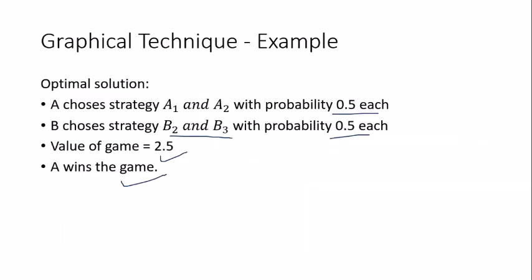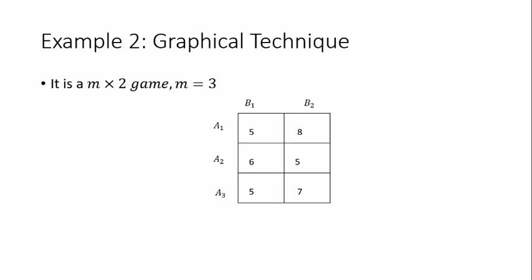Because three lines meet at the peak in this example, there are alternate valid strategy combinations (b2 & b3, b2 & b4, or b3 & b4). The probabilities will differ depending on which pair is chosen, but the value of the game remains the same at 2.5 in all cases.